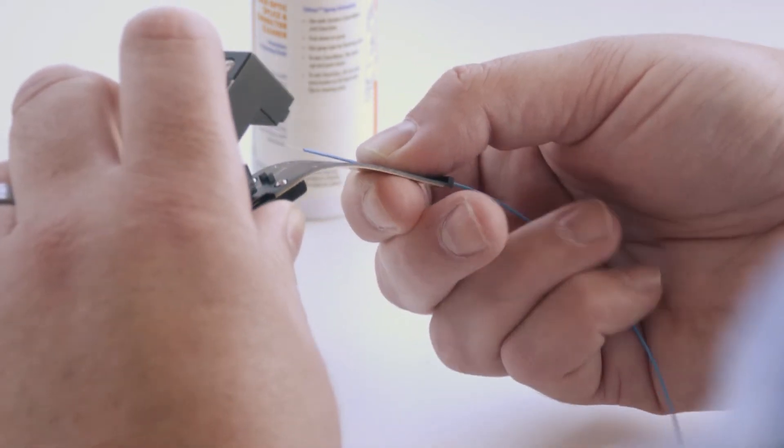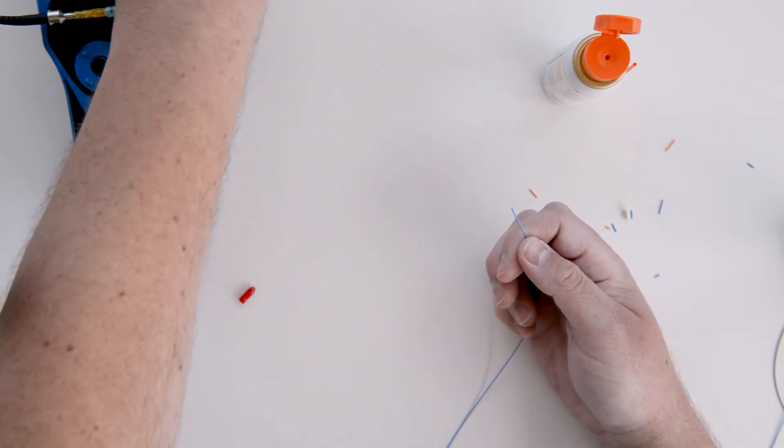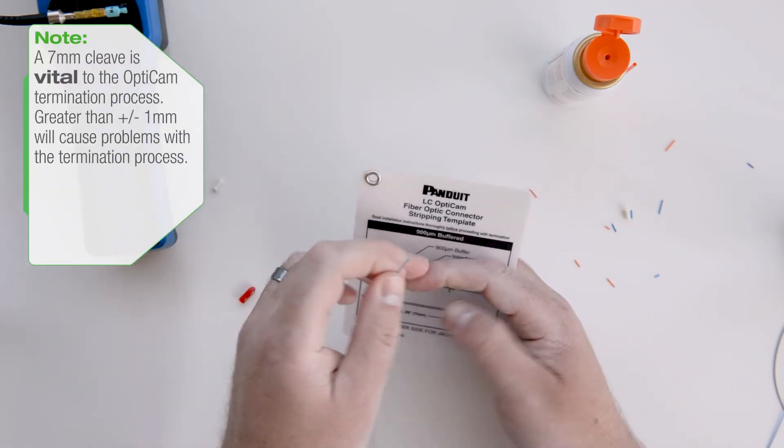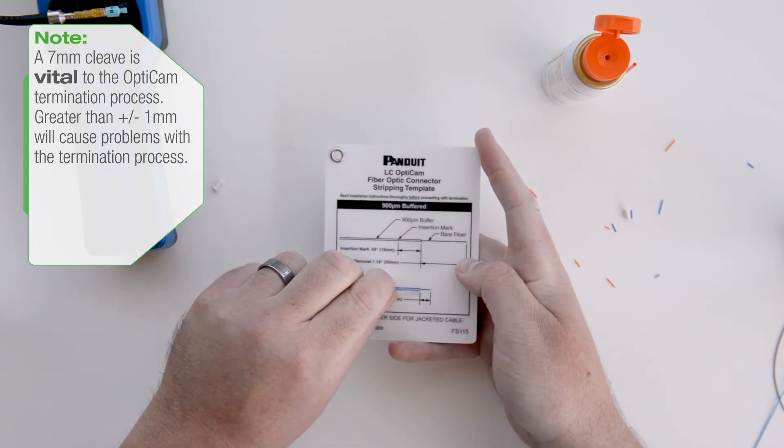Finally, gently bend the tongue until the fiber snaps. Using the LC template card, verify that the cleaved fiber is 7 millimeters long.